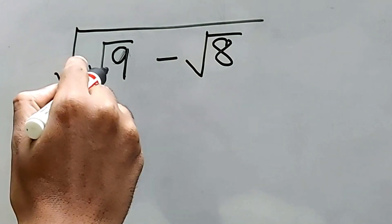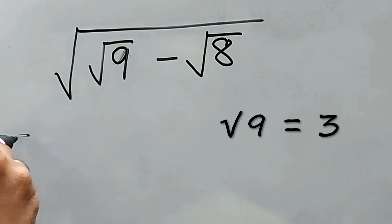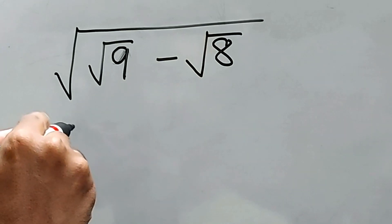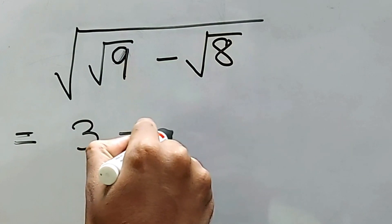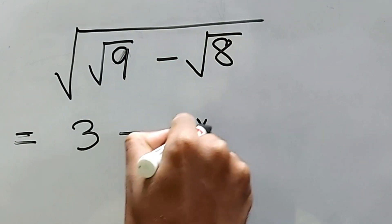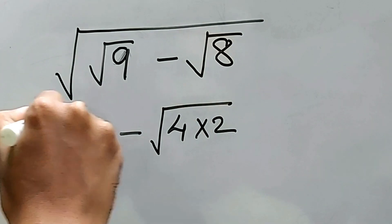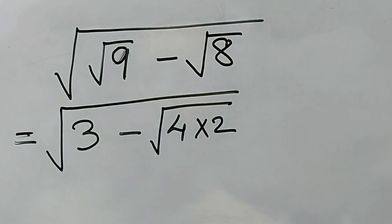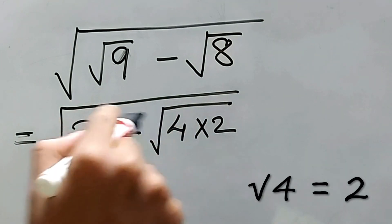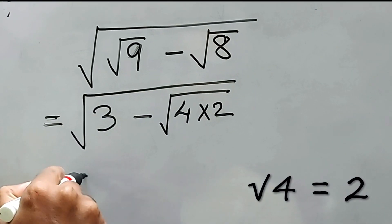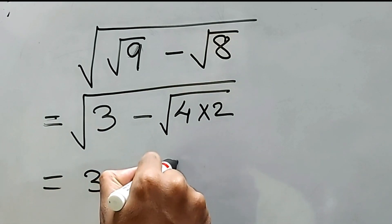Okay, seeing this 9, clearly it is visible that this is 3, right? So the first step 3 and then this 8 will be 4 into 2, right? Possible and again complete square root, right? Now 4, we know 4 means 2, right? Square root of 4 means 2. Therefore, it will be 3 minus 2 square root of 2.